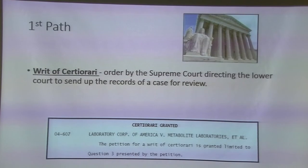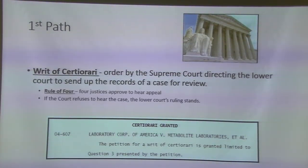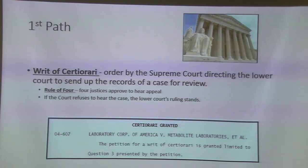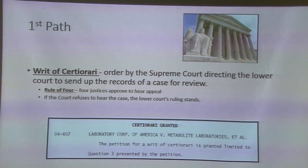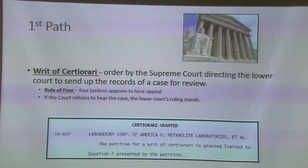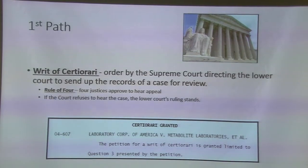There are three paths. The most common path is the writ of certiorari, in which the Supreme Court will have an appeal that they decide to call up. Notice the direction — the Supreme Court is the higher one; they will ask for it to come up. This is where the appeal was done, and law clerks go through cases with instructions from the justices to read through all these different appeals and look for certain things.